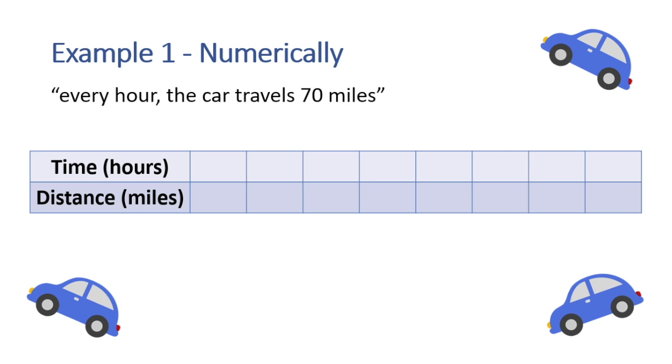We can also use this statement to fill out a table showing the function, thus giving us a numerical representation. If we have traveled for zero hours, then we haven't been able to go anywhere yet, so we have traveled zero miles. After one hour, we have traveled 70 miles, so we put a 1 in the next hour slot and a 70 in the corresponding distance slot. After two hours, we have traveled yet another 70 miles, so 70 plus 70 gives us 140 in the distance category. And likewise, after three hours, we have traveled 210 miles. We repeat this process for whatever length of time we would like to include on our table. This filled out table gives us a numerical representation of the function.